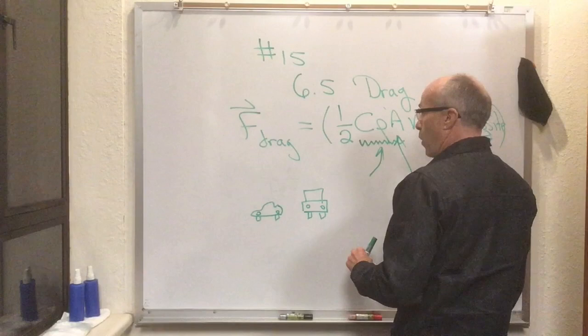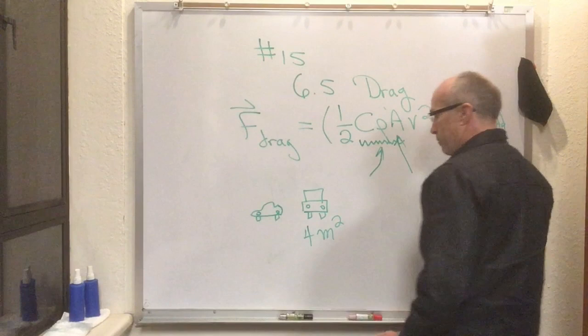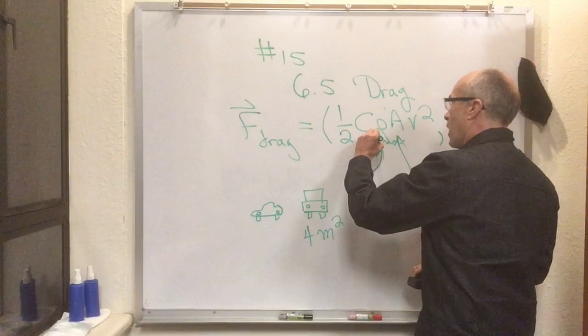Now if this Range Rover here is also about two meters wide but it's two meters high, like almost six feet or over six feet, then that would be two by two is four square meters. So the area is involved, the density of the medium you're passing through, the area, the velocity squared, and then there's this one more thing.